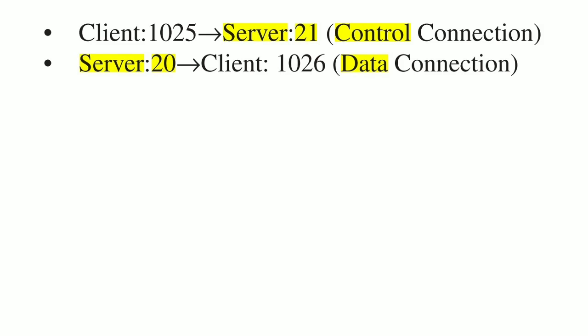The control connection and data connection of FTP work as follows: the client uses any non-reserved port to connect to the server's reserved port for the control connection, which is TCP port 21. The server then initiates a second connection — the data connection — to transmit data to or from the client. The server uses TCP port 20 for the data connection, connecting to any non-reserved port on the client side (reserved ports are 0 to 1023).